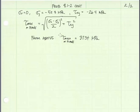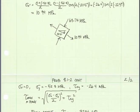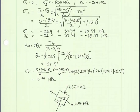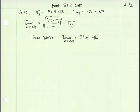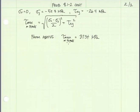For the next part of the problem, we calculate the maximum in-plane shear stress. Using the equation for τmax in-plane, with the values for σx, σy, and τxy — you may notice this equation is identical to the second term of the principal stress equation above, which we already calculated to be 37.34 MPa. So the maximum in-plane shear stress is 37.34 MPa.